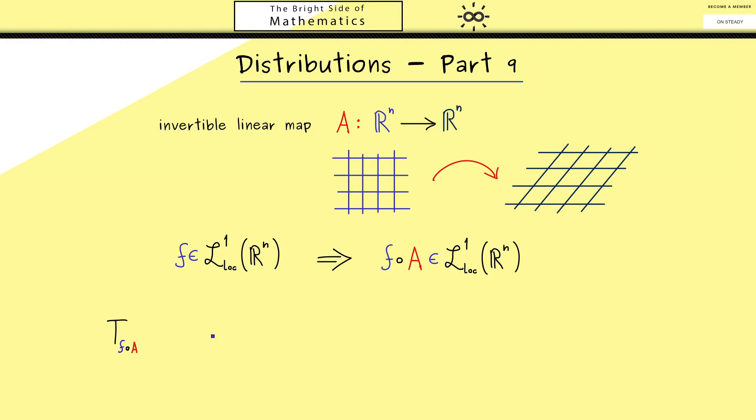Therefore we first need to look what T_f is. So let's apply it to a test function φ. Of course we don't have a problem here. We know this is given by an integral. However now inside the function f here we have the map A. So this is simply what the composition does.